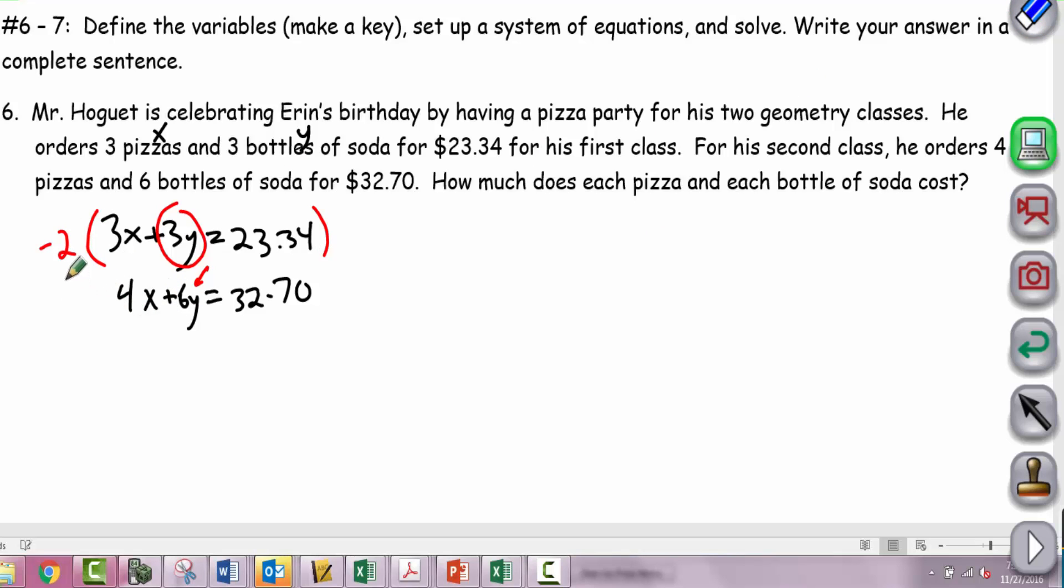When I multiply by negative 2, I multiply everything: the 3x becomes -6x, the 3y becomes -6y, and 23.34 becomes -46.68. This is where you might want to use a calculator because with decimals you have to be careful. From here, the 6y's cancel and 4x minus 6x gives us -2x. The rest is just details—writing the equations is what's different from the last sections.